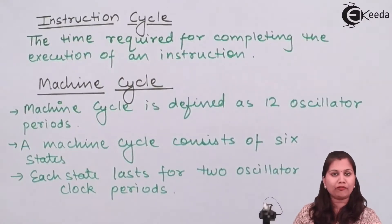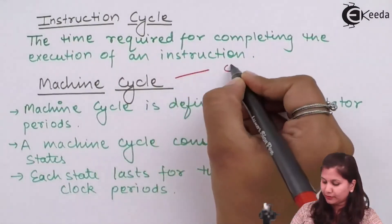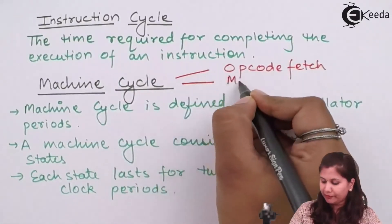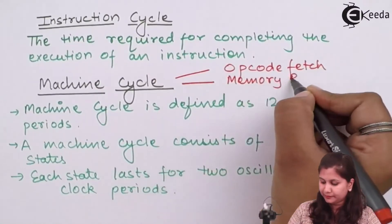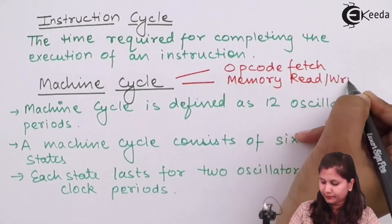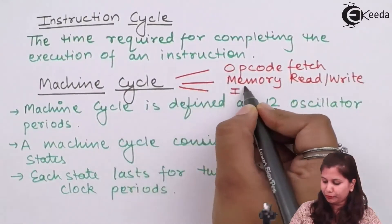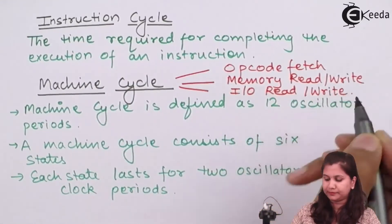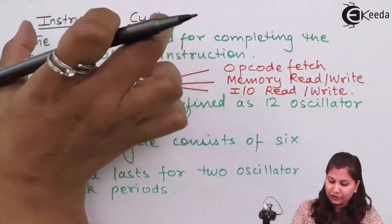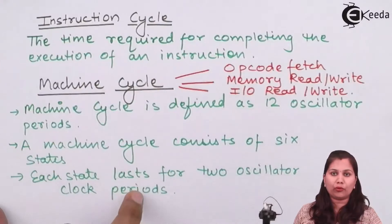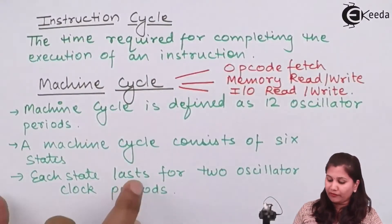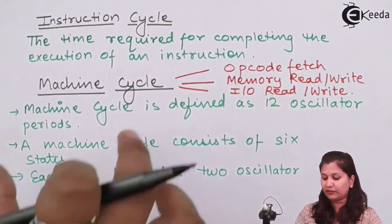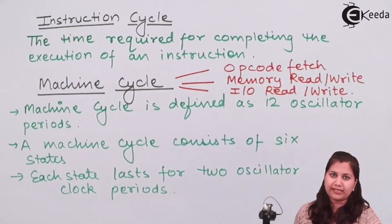Machine cycles can be of various types: opcode fetch, memory read or memory write, and input/output read or input/output write. We can say that an instruction cycle consists of one to four machine cycles — that is, when an instruction is executed, its execution will consist of one to four machine cycles.